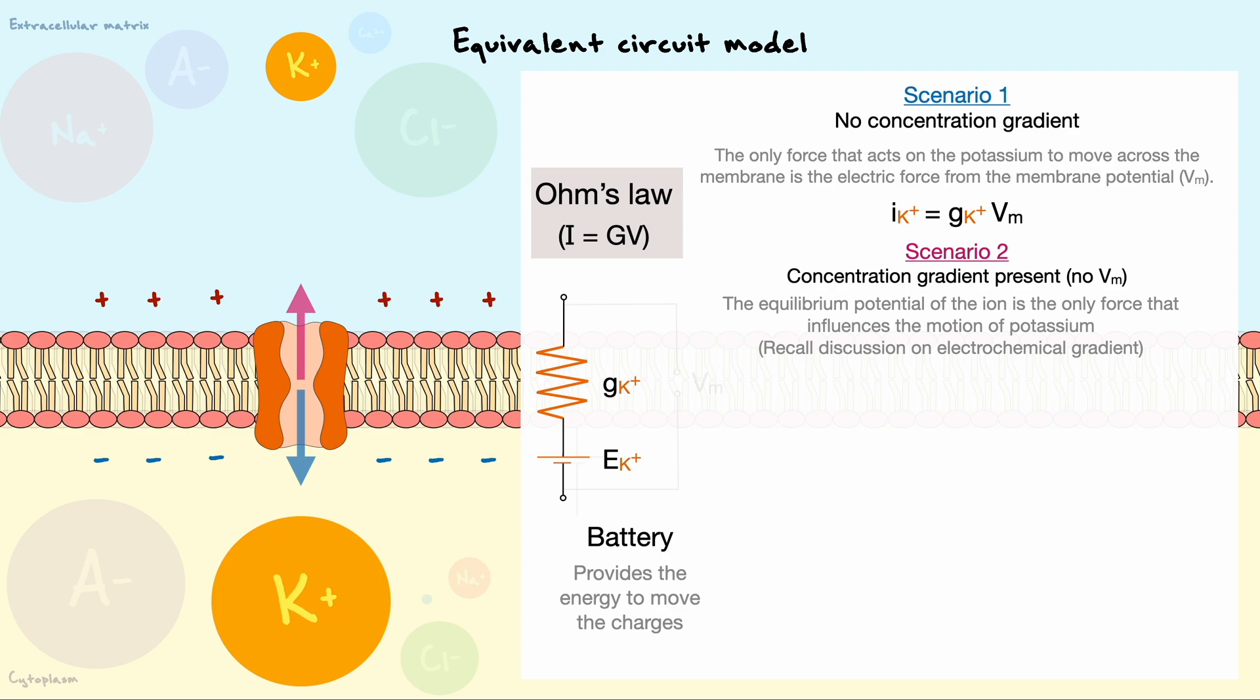Now let me mention that by convention, we consider positive current as the movement of positive charges out of the cell. In this scenario, since we consider the chemical gradient, we can expect the potassium to flow out of the membrane. Hence, the outward movement of potassium corresponds to a positive value.